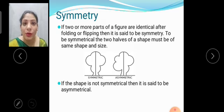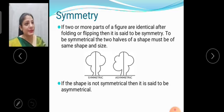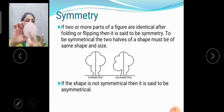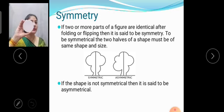First of all, we will learn about symmetry. What is symmetry? If two or more parts of a figure are identical after folding or flipping, then it is said to be symmetrical. To be symmetrical, the two halves of the shape must be same shape and size. For example, in this cap, we can see if we are folding it from the middle, the two halves will be same. So we can say this is a symmetrical shape.